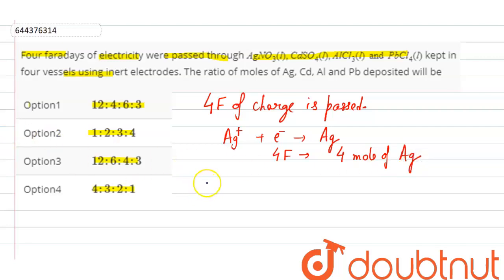Similarly, the charge of Cadmium will be plus 2. So by 4 Faraday, 2 moles of Cadmium will be deposited.